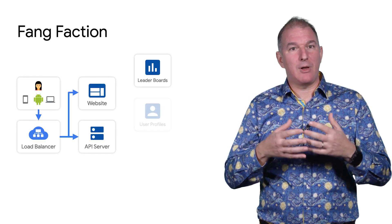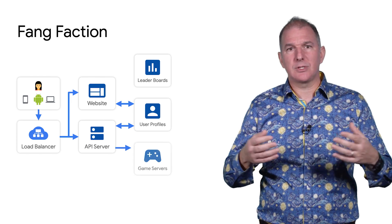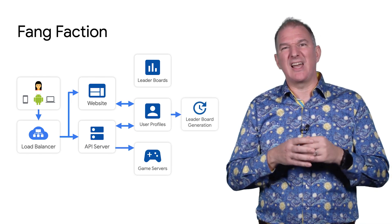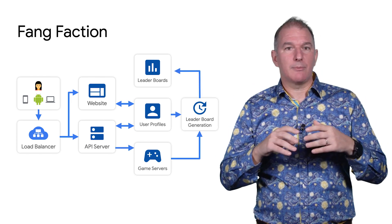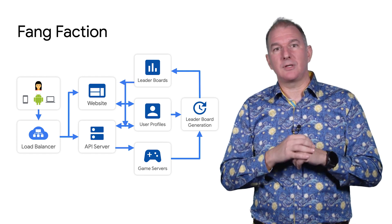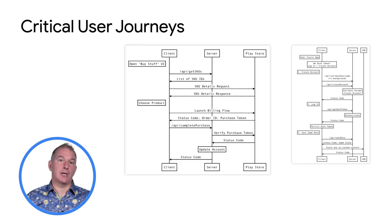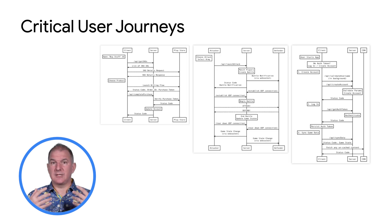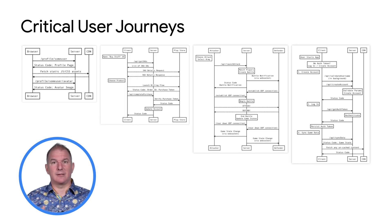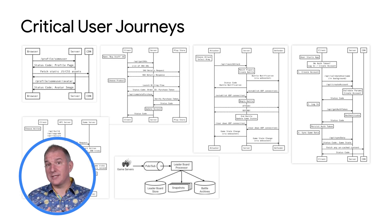We came up with a simple online game, played by millions of users all over the world, divided into vampire clans. We also have a leaderboard to check if you're in the top 10. There are plenty of business-critical user journeys: login, monetization, battles, profiles, leaderboard generation — all things your players care about.